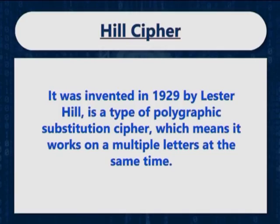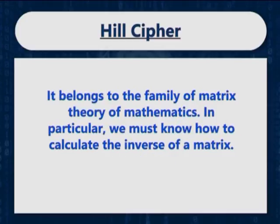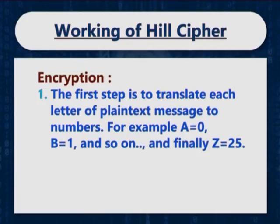The hill cipher was invented in 1929 by Lester Hill. It is a type of polygraphic substitution cipher, which means it works on multiple letters at the same time. The hill cipher belongs to the family of matrix theory of mathematics. In particular, we must know how to calculate the inverse of a matrix. Now let us look at the working of hill cipher and how encryption is performed using hill cipher.